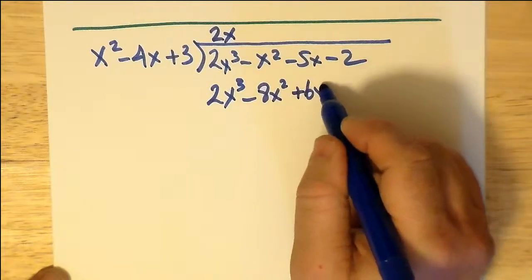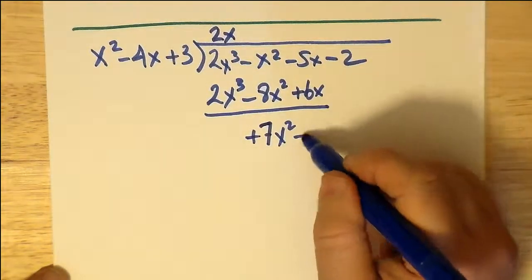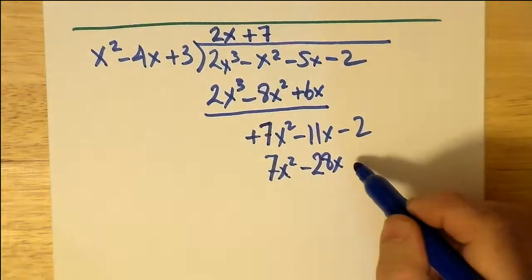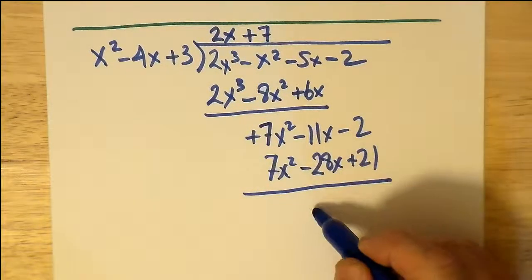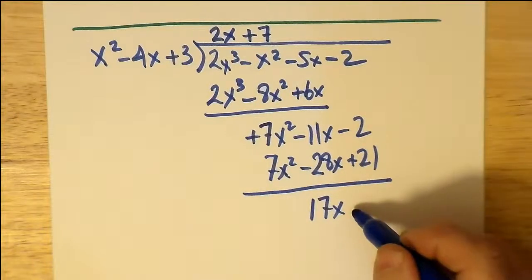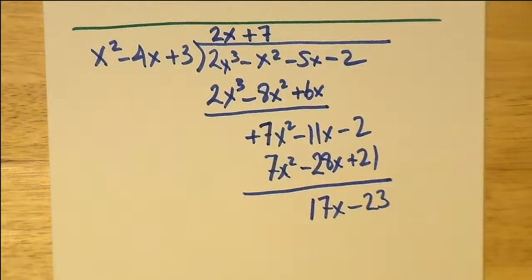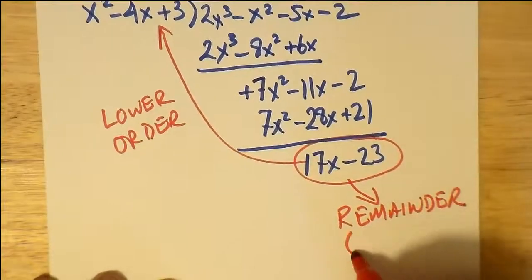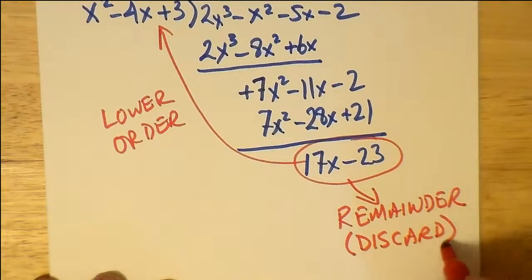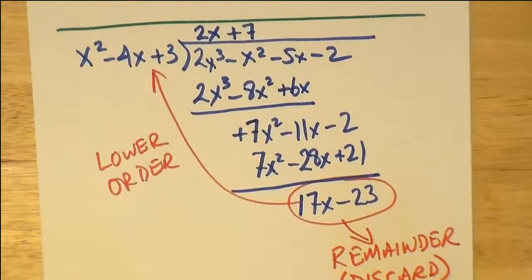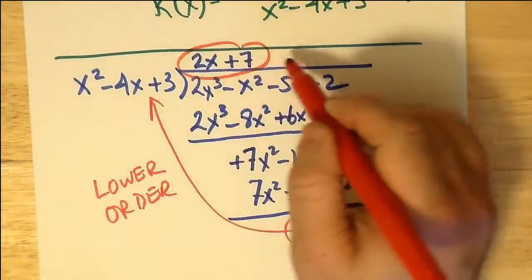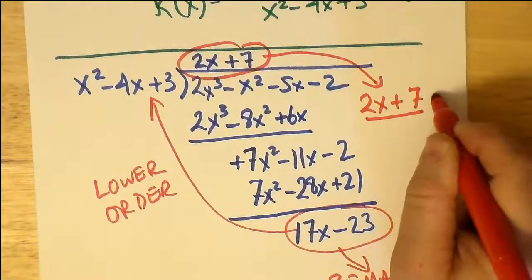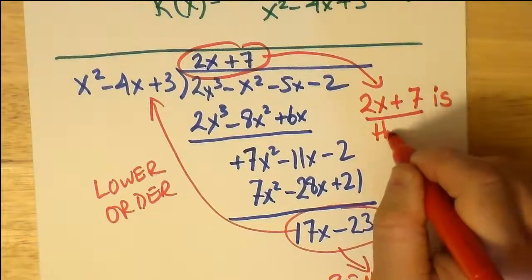We have to just take precautions and do the subtraction normally, but what you end up with instead of just a constant in your remainder, you end up with something like 17x minus 23. Now, for all intents and purposes, because it's a lower order than what we were dividing into, that is a remainder and believe it or not, we discard it. We discard it because as x goes to infinity, 17x minus 23 becomes less significant, and it's really 2x plus 7 that is the actual oblique asymptote.